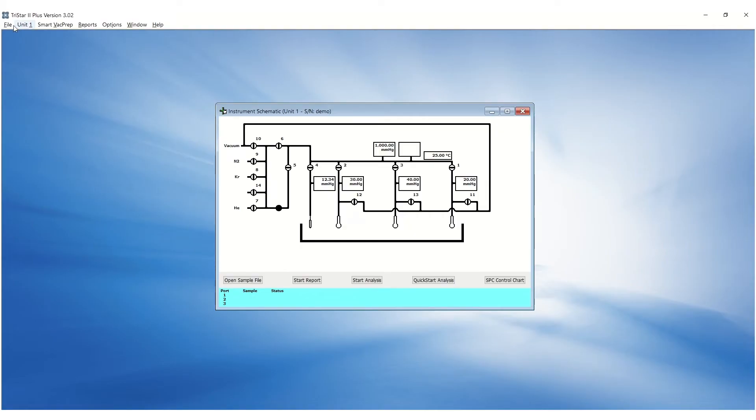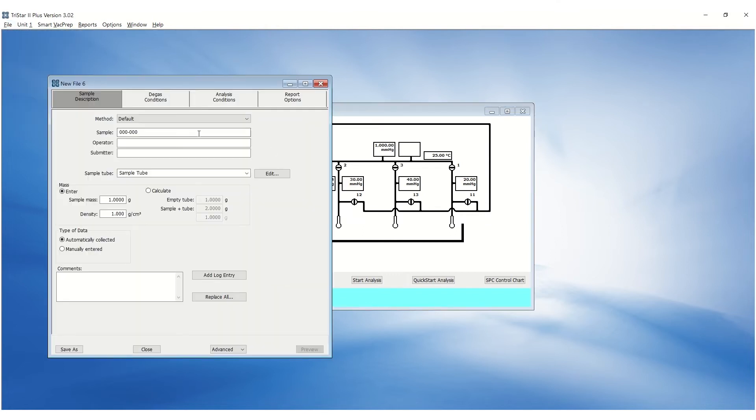In the MicroActive software, go to the File menu and click on New Sample to create a new sample file. Fill out the sample and operator text fields.